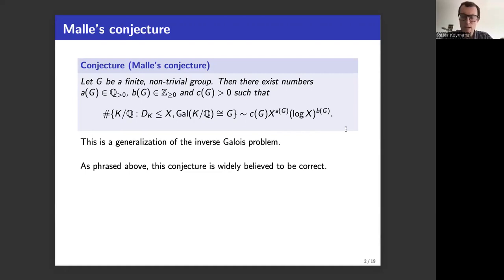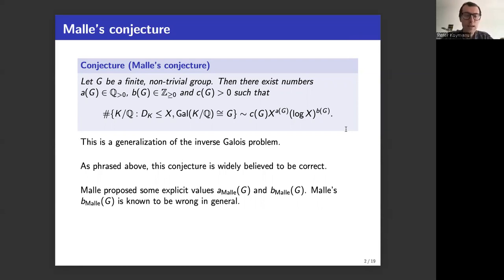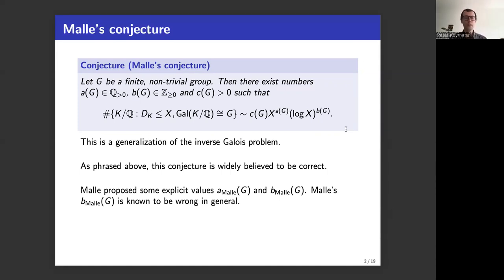That's a slightly misleading statement because originally when Malle proposed this conjecture, he also proposed explicit values A_G and B_G. The specific value B_G that he proposed is now known to be wrong in general — a counterexample was given by Jürgen Klüners in a very nice short paper. Without specifying what A_G and B_G are, the conjecture is widely believed correct, and the original A_G is still also widely believed correct.